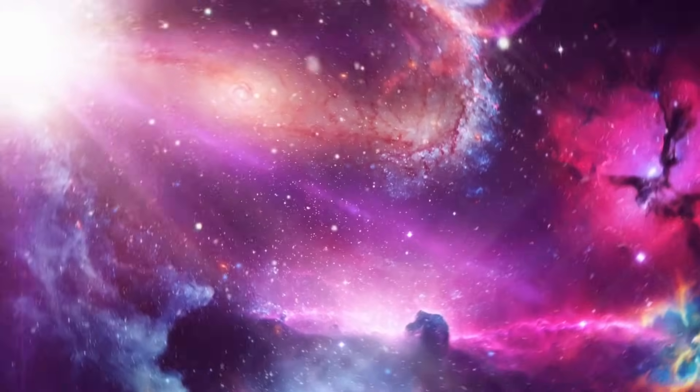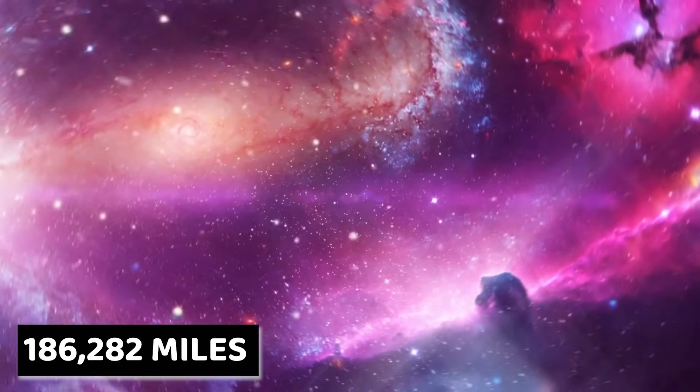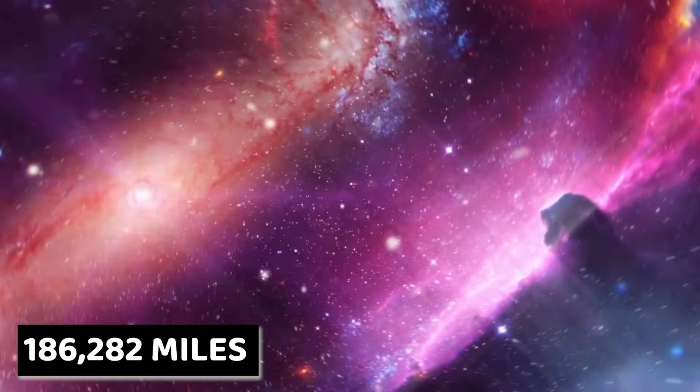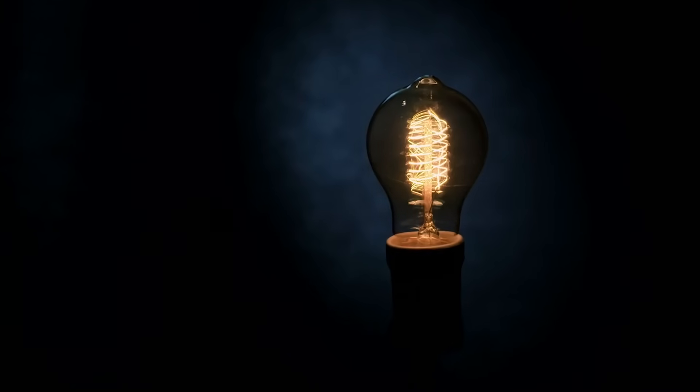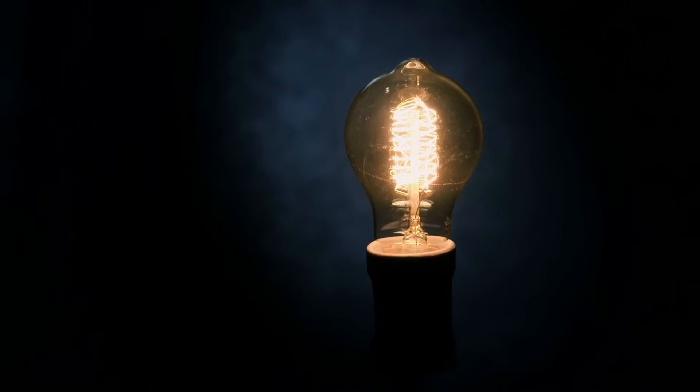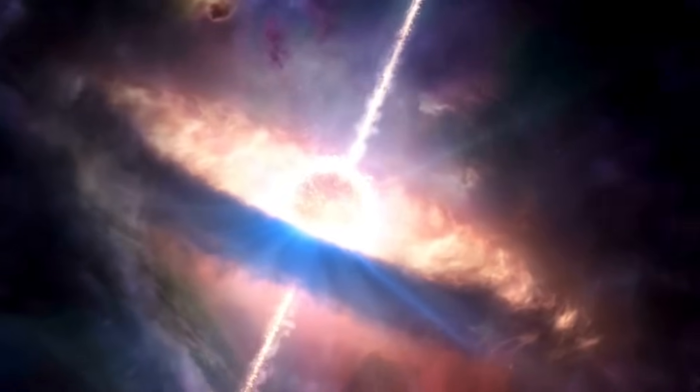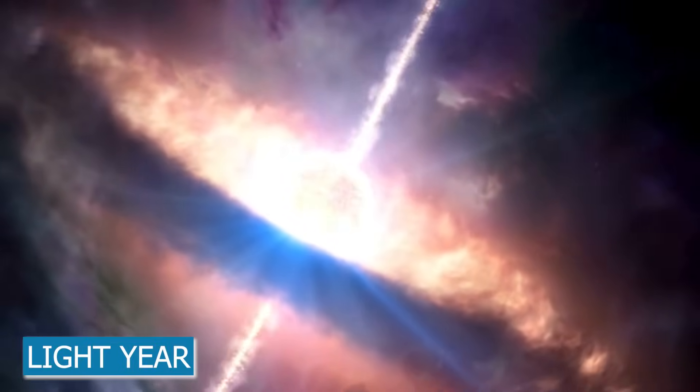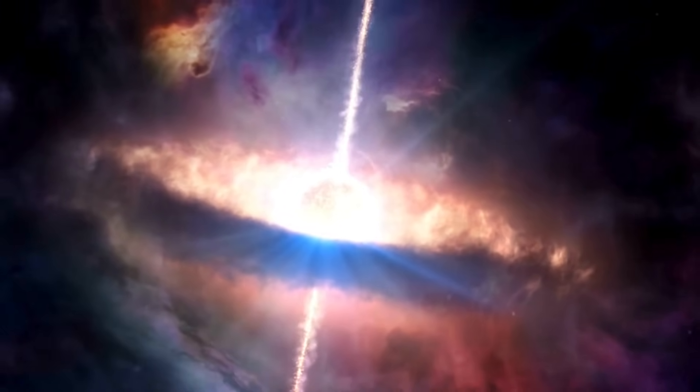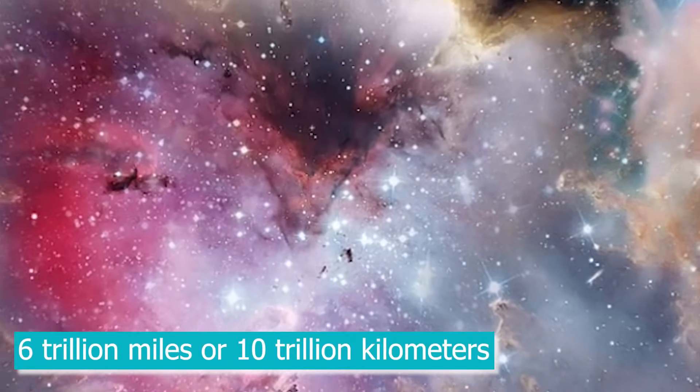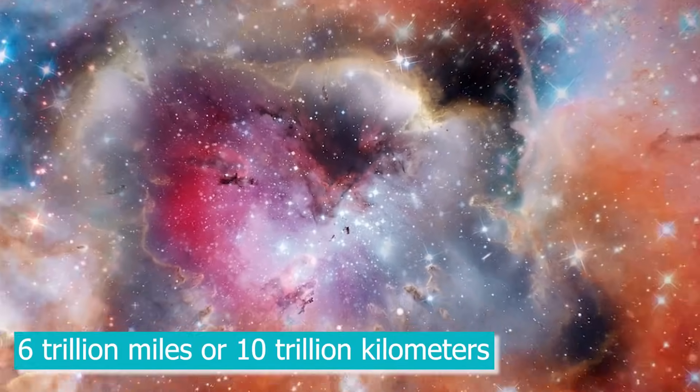This means light covers about 186,282 miles in a single second. It's so rapid that when you switch on a light bulb in a dark room, the light instantly fills the space, and you won't perceive it moving. Another unit of measurement related to light is the light year, representing the distance light travels in one year, approximately 6 trillion miles or 10 trillion kilometers.